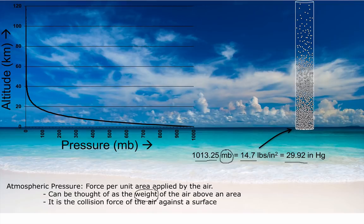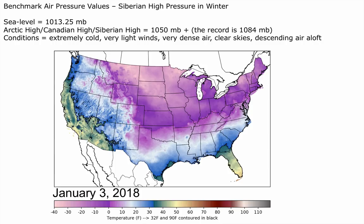Let's look at some benchmark values. A massive Siberian high-pressure system in the middle of winter can get so bitterly cold that the atmosphere becomes so dense that pressure builds up to around 1,050 millibars — the record is 1,084. Here in the United States, big Arctic or Canadian high-pressure systems can push pressure up to around 1,040–1,050 millibars. When this happens it's extremely cold, winds are very light, the air is very dense, skies are clear, and we often find descending air aloft.